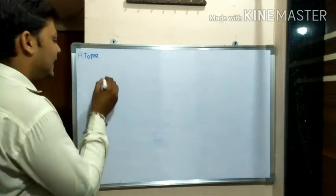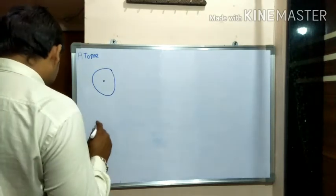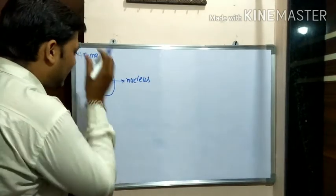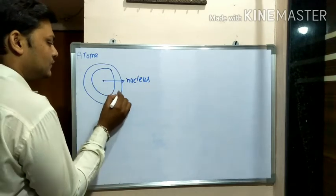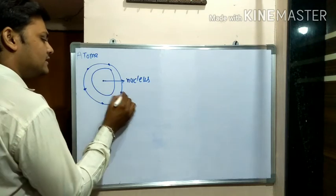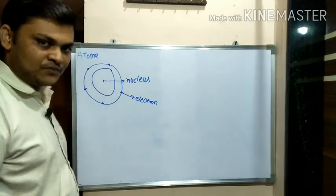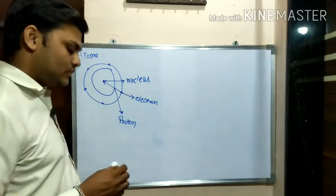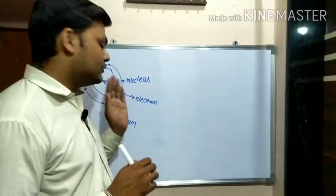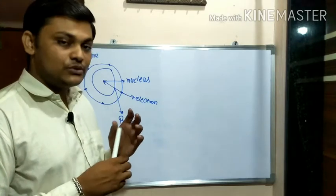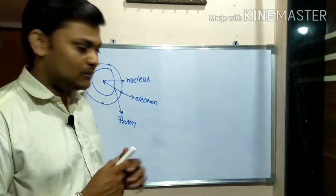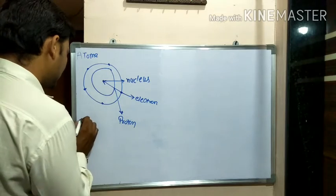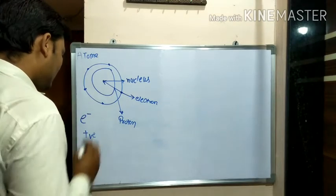In previous class we learned that at the center of an atom is the nucleus. Around it, electrons start moving. These electrons are tied up with the nucleus by protons. Electrons are negatively charged particles which revolve around the nucleus. The force that joins electron and nucleus is the proton. Electrons are negatively charged while protons are positively charged.